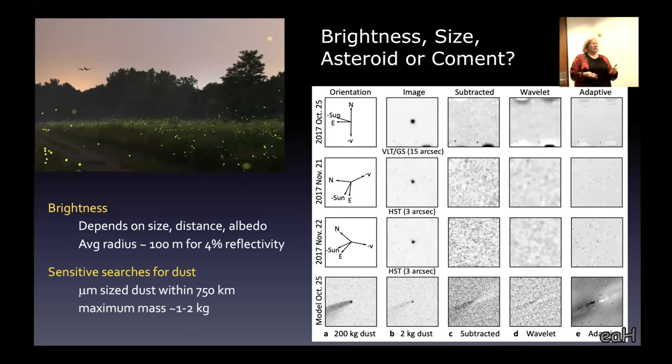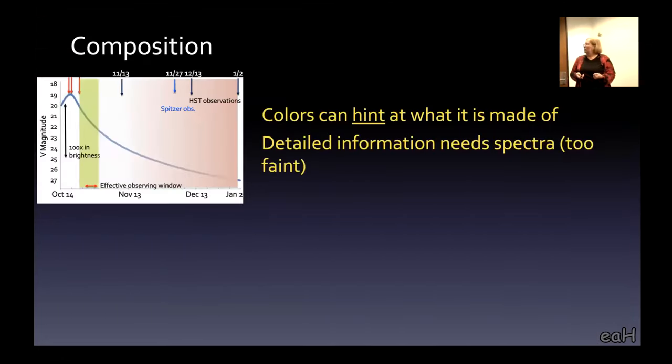What about its composition? Well, colors can give you a hint of what something is made of. But if you really want to know the chemistry, you have to take a spectrum. The problem is, once you get to magnitude 22, it starts to get really hard to get a spectrum. So we're left with color filters.